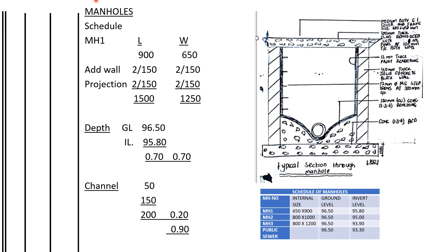When excavating for manholes, we shall consider the manhole schedule. For manhole one, the length is 900 and the width is 650. To find the pit size, we take the internal measurements of the manhole, then add the walls on both sides — 150 millimeters on each side, so two times 150 for the length and two times 150 for the width.